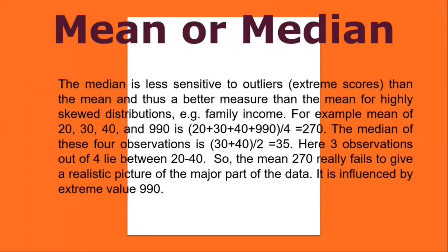When to use mean or median: the median is less sensitive to outliers (extreme scores) than the mean, and thus a better measure for highly skewed distributions — e.g., family income. For example, the mean of 20, 30, 40, 990 is (20 + 30 + 40 + 990) / 4 = 270, while the median is (30 + 40) / 2 = 35. Here, three observations out of four lie between 20 and 40, so the mean of 270 fails to give a realistic picture — it is influenced by the extreme value 990.